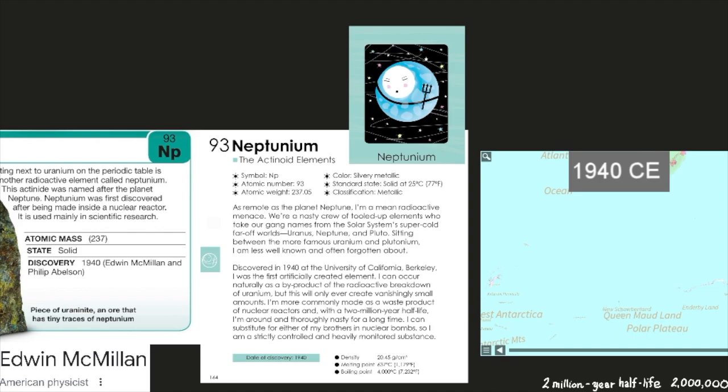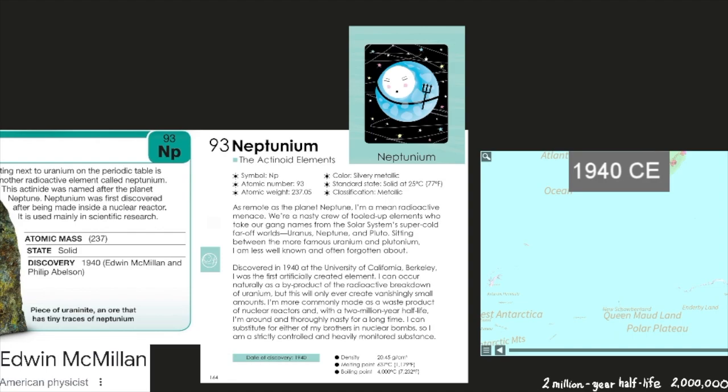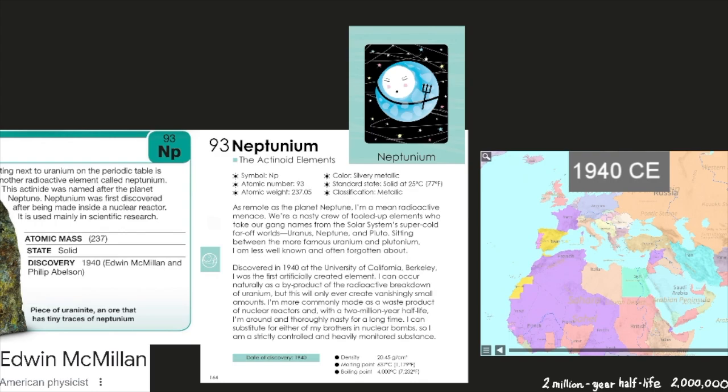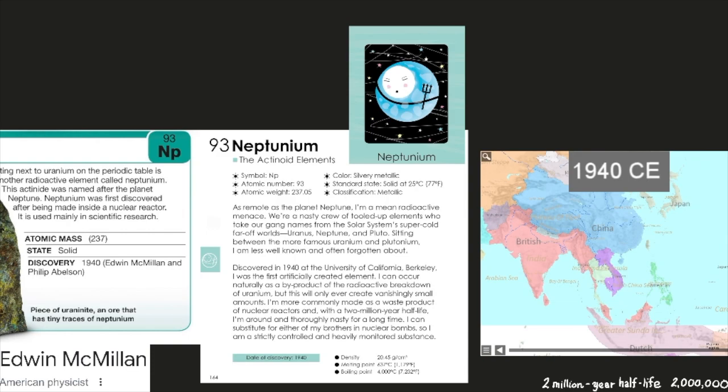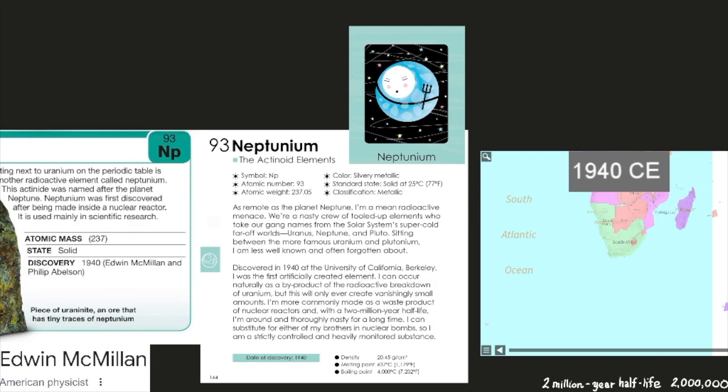As remote as the planet Neptune, I'm a mean radioactive menace. We're a nasty crew of tooled up elements who take our gang names from the solar system's super-cold, far-off worlds: Uranus, Neptune, and Pluto. Sitting between the more famous uranium and plutonium, I am less well-known and often forgotten about. Discovered in 1940 at the University of California Berkeley, I was the first artificially created element.